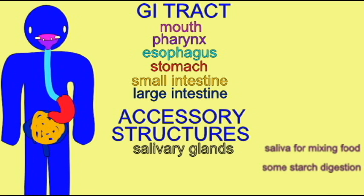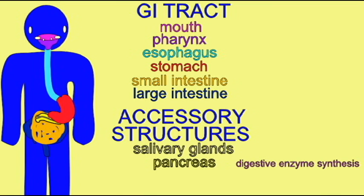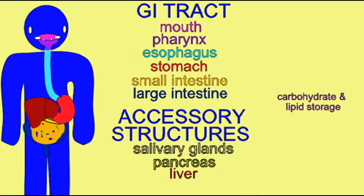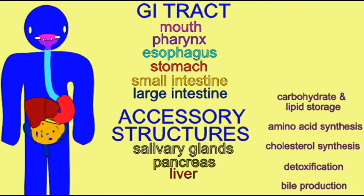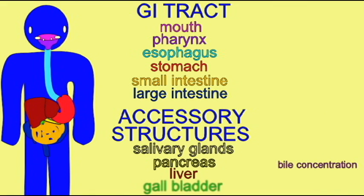As the stomach empties into the small intestine, the pancreas, liver, and gallbladder also empty into the small intestine. The pancreas secretes a number of digestive enzymes. The liver secretes bile, which can be stored and concentrated in the gallbladder before being secreted.